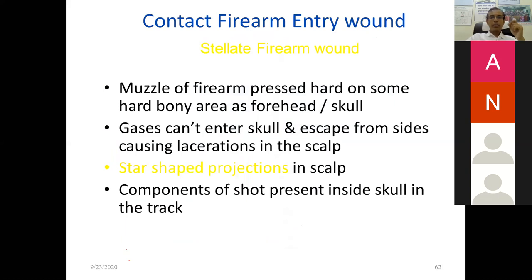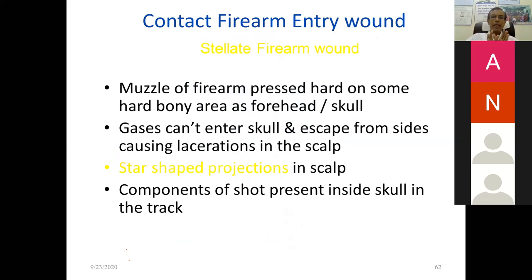Contact wound phenomena: when the muzzle is in direct contact, especially over a hard bony area like the skull, gases cannot escape into the air and enter the nearby tissue, producing an explosive lacerated wound. Star-shaped projections are present in the skull. The entry wound shows a circular wound from the bullet, but the star shape is due to lacerations from the gases entering the skin.